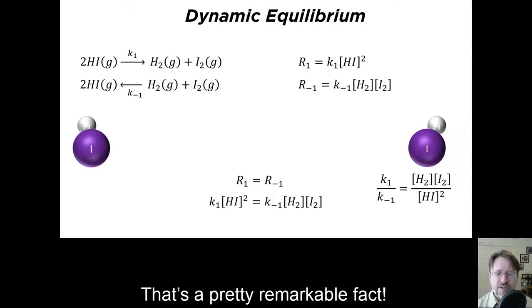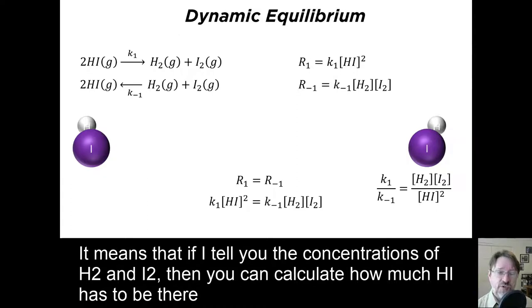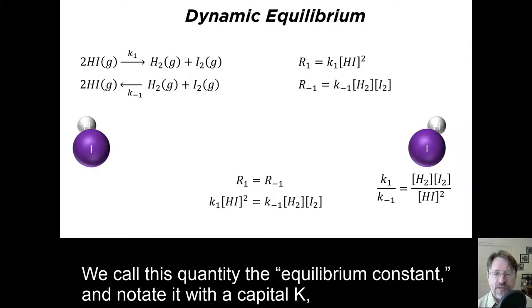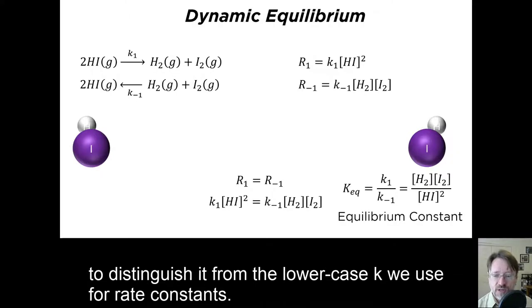That's a pretty remarkable fact. It means that if I tell you the concentrations of H2 and I2, then you can calculate how much HI has to be there for the system to be at equilibrium. We call this quantity the equilibrium constant and notate it with a capital K to distinguish it from the lowercase k we use for rate constants.